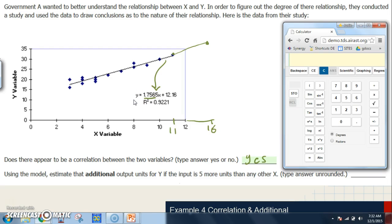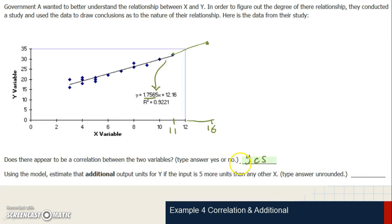So here we have 1.7565, and we're multiplying that by the additional units, which is five, and what we get is 8.7825. So 8.7825.